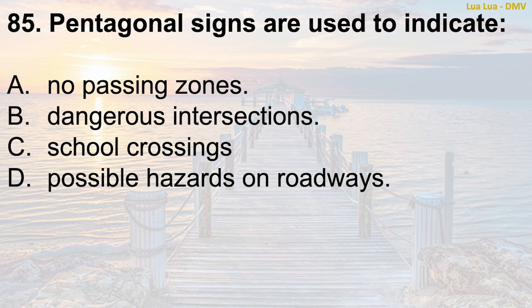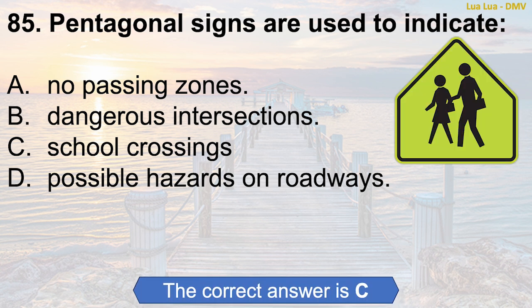Question 85: Pentagonal signs are used to indicate — A. No passing zones. B. Dangerous intersections. C. School crossings. D. Possible hazards on roadways. The correct answer is C: School crossings.